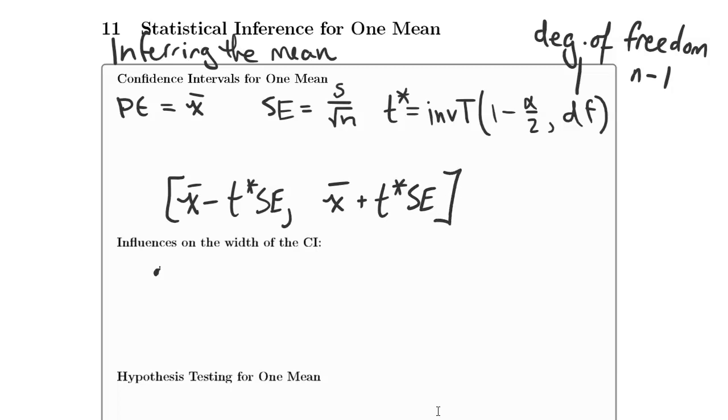The influences on the width of the confidence interval are the same as before. As the confidence level goes up, so does the width. As the sample size and therefore the degrees of freedom go up, the width goes down. Our estimate gets better.